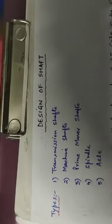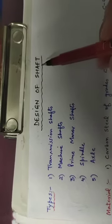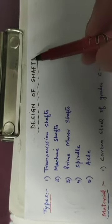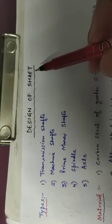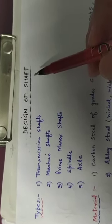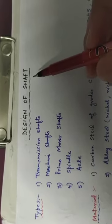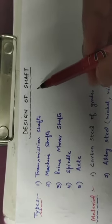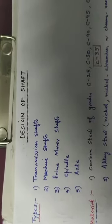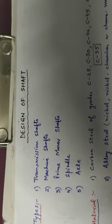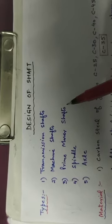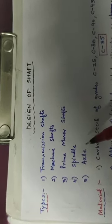Today, we are going to discuss the design of a shaft. Basically, a shaft is a rotating machine member which is used to transmit power from one point to another. It is mostly cylindrical in cross-section and supports the revolving parts of a machine such as a pulley, gear, or flywheel. There are various types of shafts: transmission shaft, machine shaft, prime mover shaft, spindle, or axle.